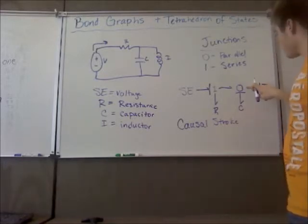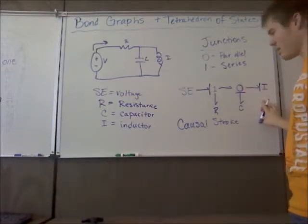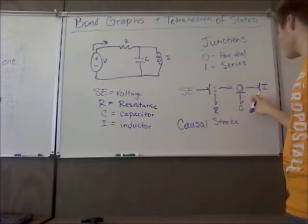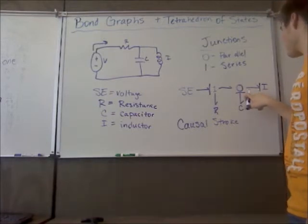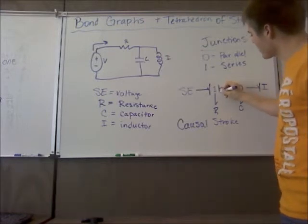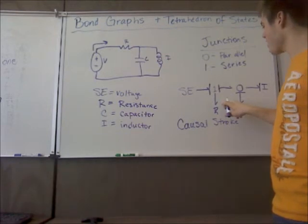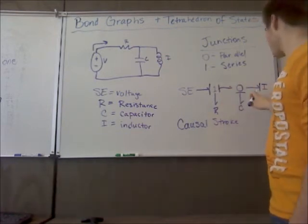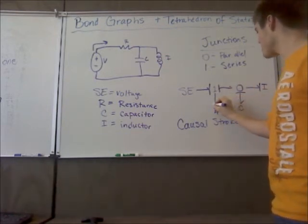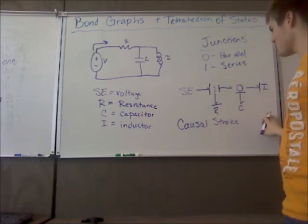So a zero junction can only have one causal stroke in its general vicinity. And right now it only has one. So from here I'd want to assign the causal stroke right here on this one. And the resistor will have it either way. It doesn't have a preference. And it looks like this is going to work. So I can put my resistance causal stroke right there. And we've just assigned the causal strokes to the system.